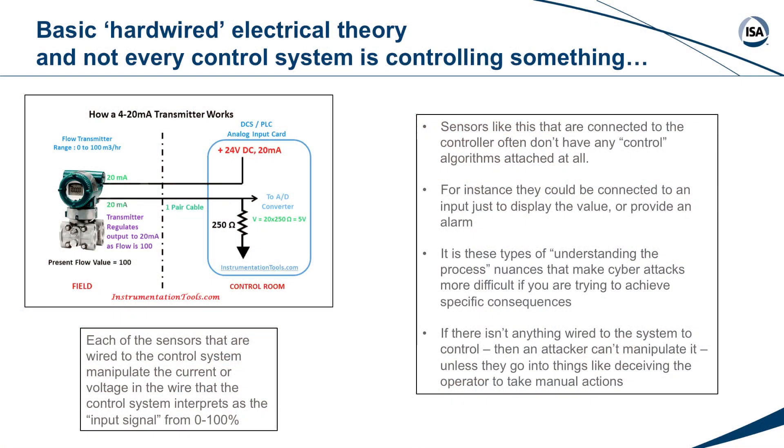The corollary to that in a current loop became 4 to 20 milliamps. So in a loop, we used current because then you could detect if the wire got broken. If you used voltage and you had 0 volts be the 0% signal, if the wire got broken, the control system would just say, oh well it's just reading 0. In a 4 to 20 milliamp system, if the system has 0 in it, it means there's a fault or a break.